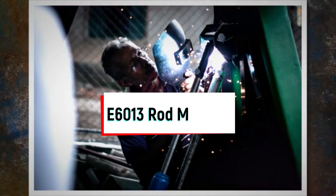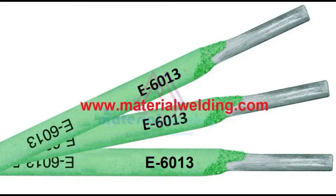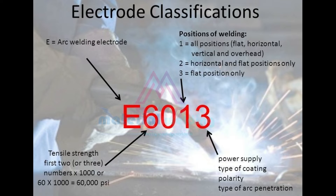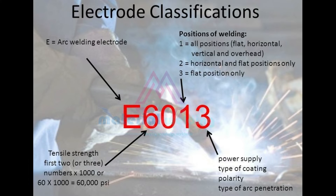E6013 welding rod meaning: similar to other welding electrodes, each digit in the E6013 electrode has its own meaning, giving very valuable information about this electrode. E stands for electrodes for stick welding. The next two digits 60 indicate the tensile strength of the weld deposit is 60 KSI or 60,000 PSI. The next digit 1 indicates it is an all-position electrode, meaning flat, vertical, overhead, and horizontal positions.